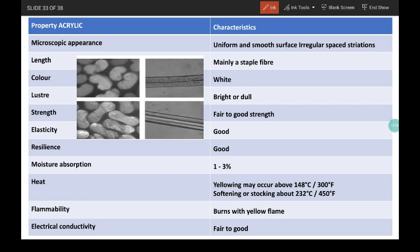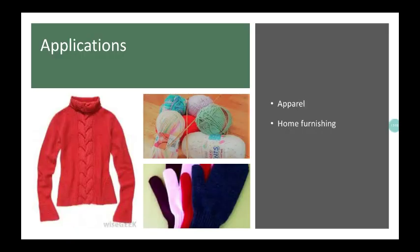Acrylic has uniform and smooth surface with irregularly spaced striations. Its length is mainly staple fiber. It has white color but bright to dull luster. Fair to good strength. Elasticity is good. Resilience is good. Moisture absorption is lying between 1 to 3 percent. Effect of heat: it may yellow above 148 degree centigrade and soften or stick after 232 degree centigrade. Effect of flame: it burns rapidly with yellow flame. And it has fair to good electrical conductivity. It is used for apparel and for home furnishing items.